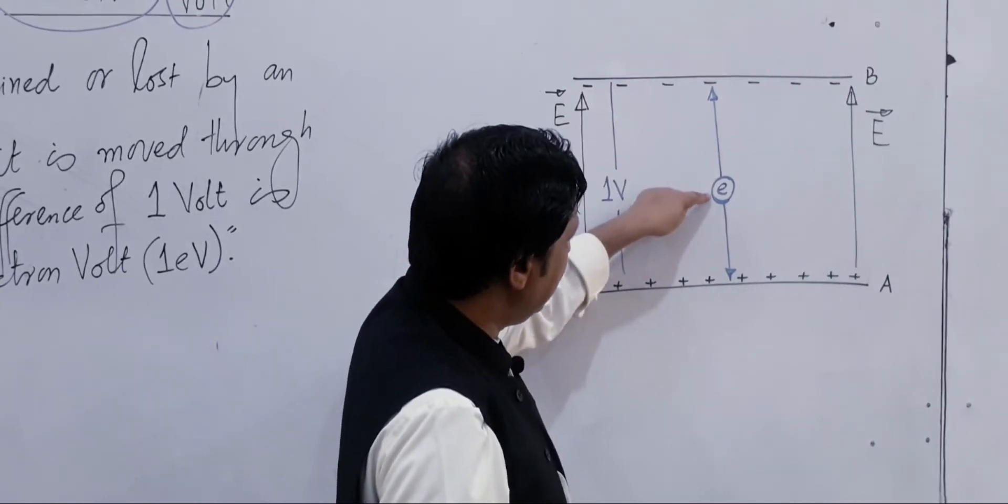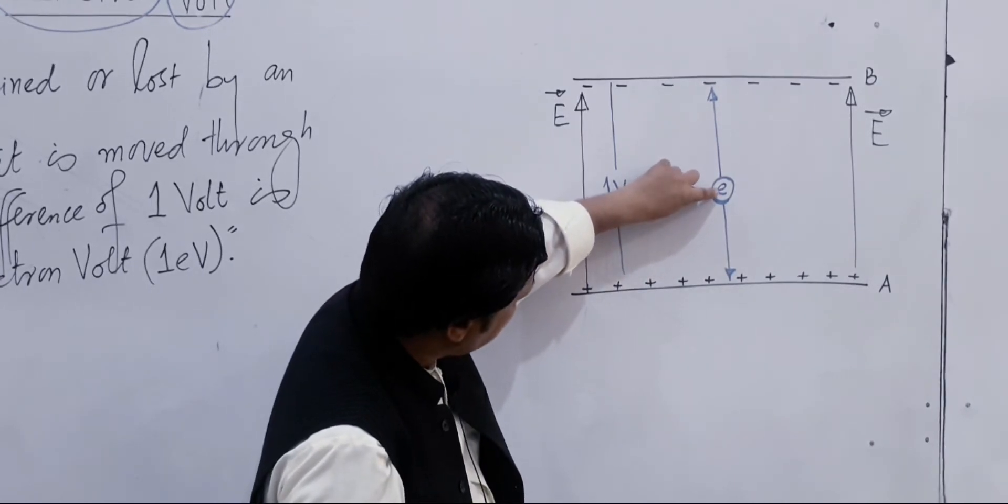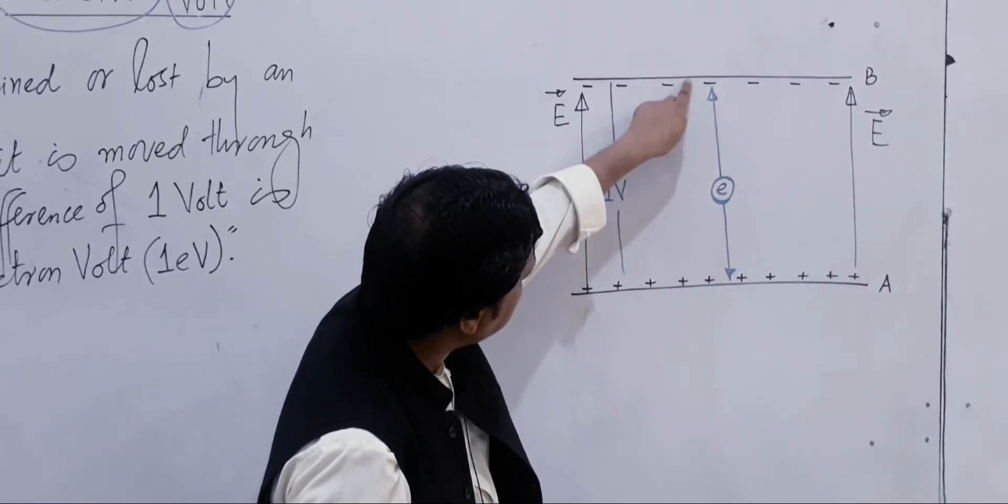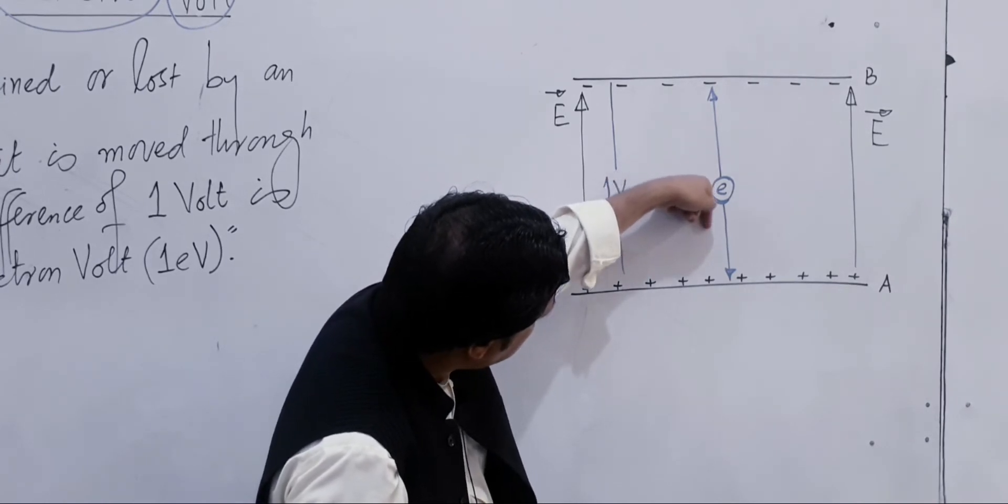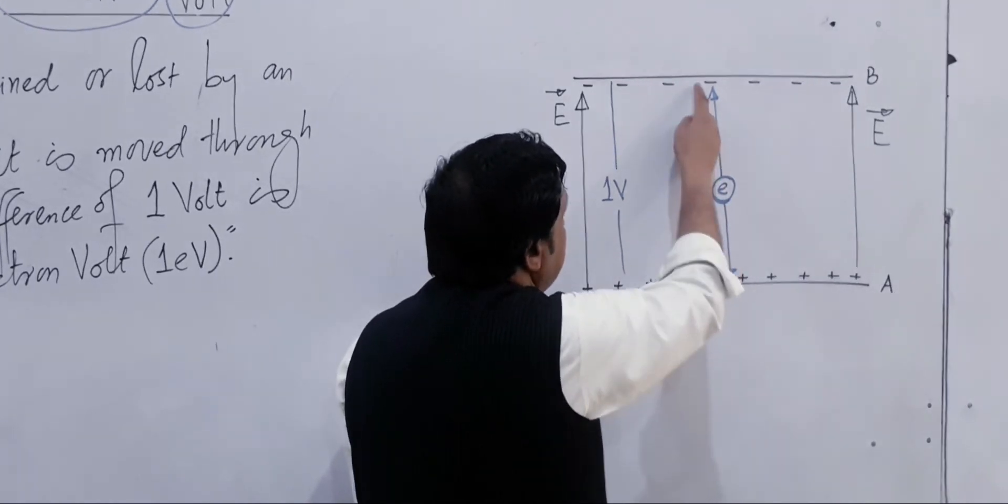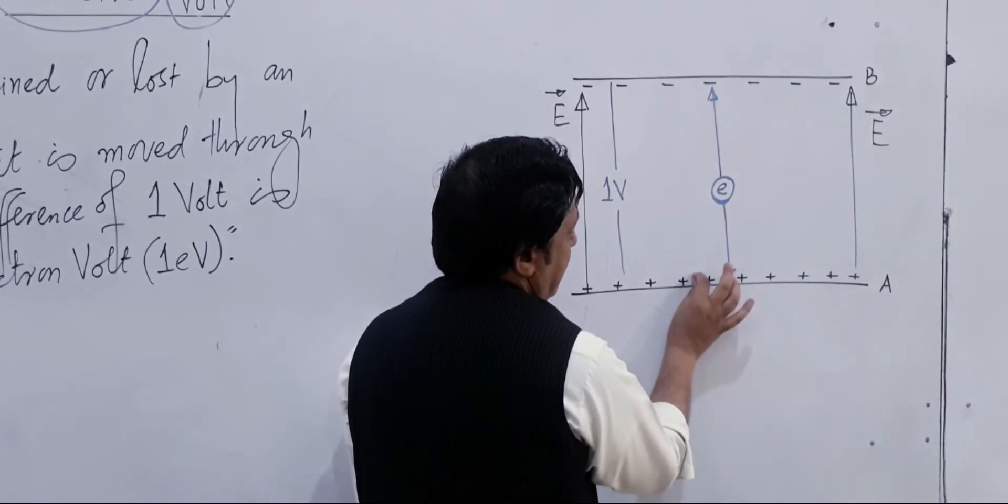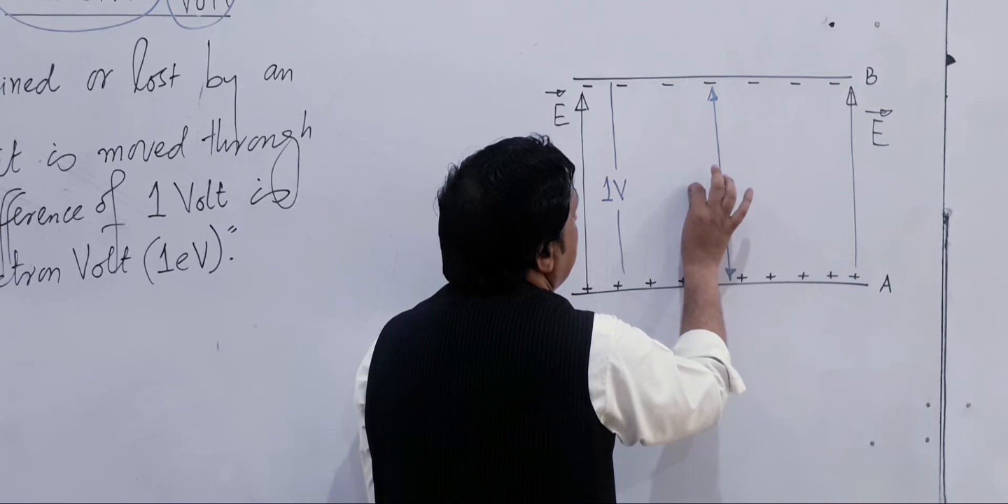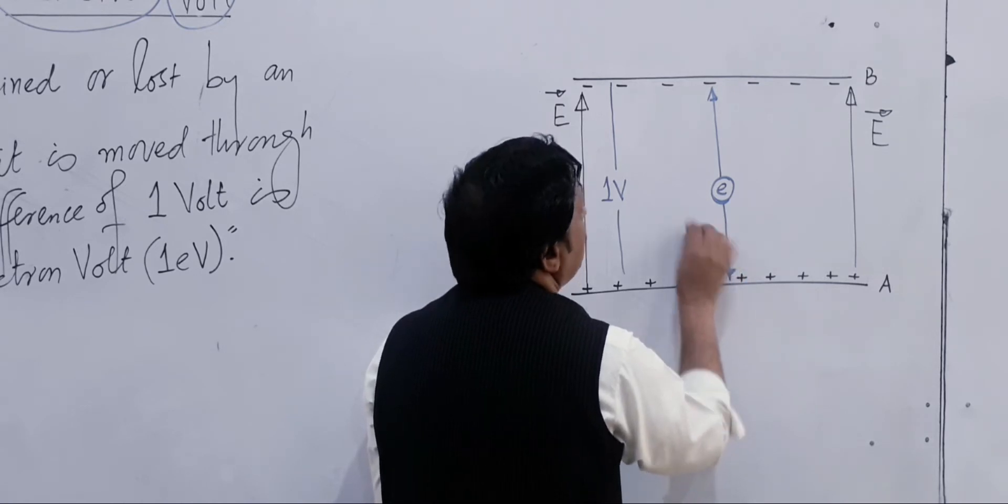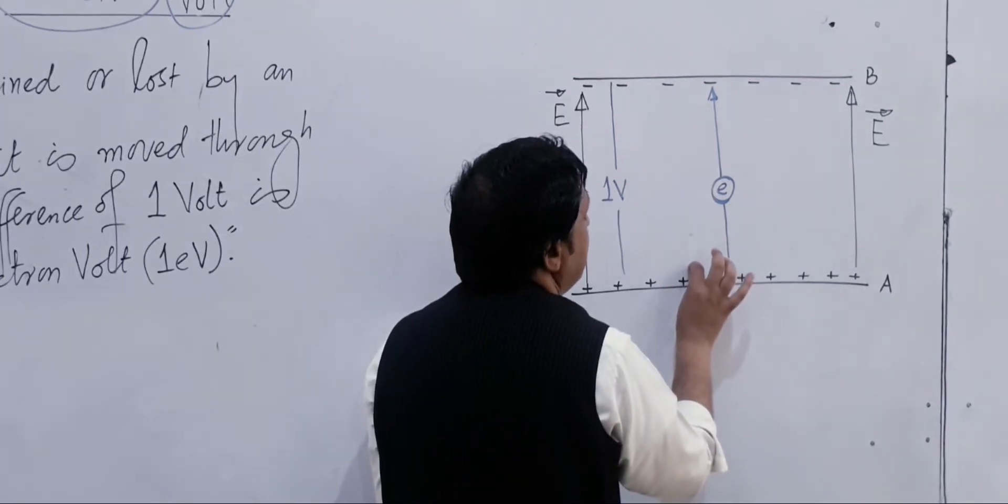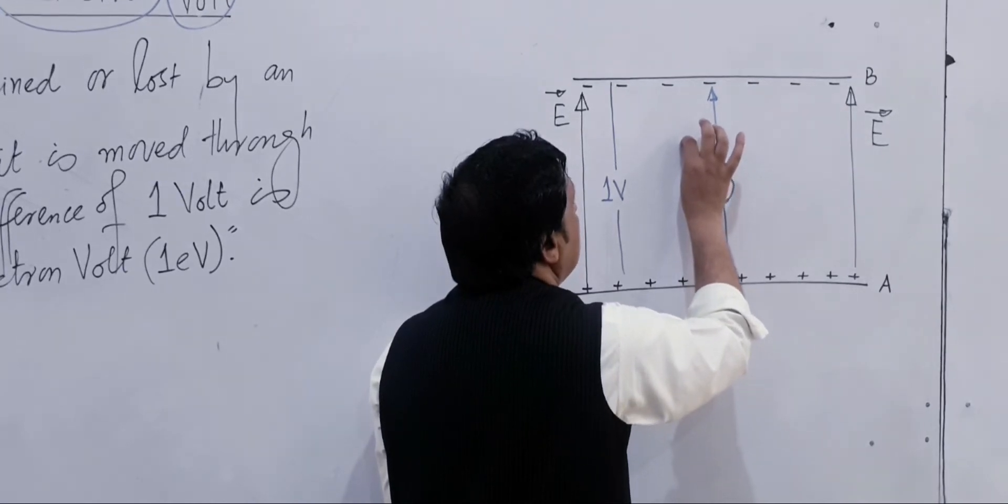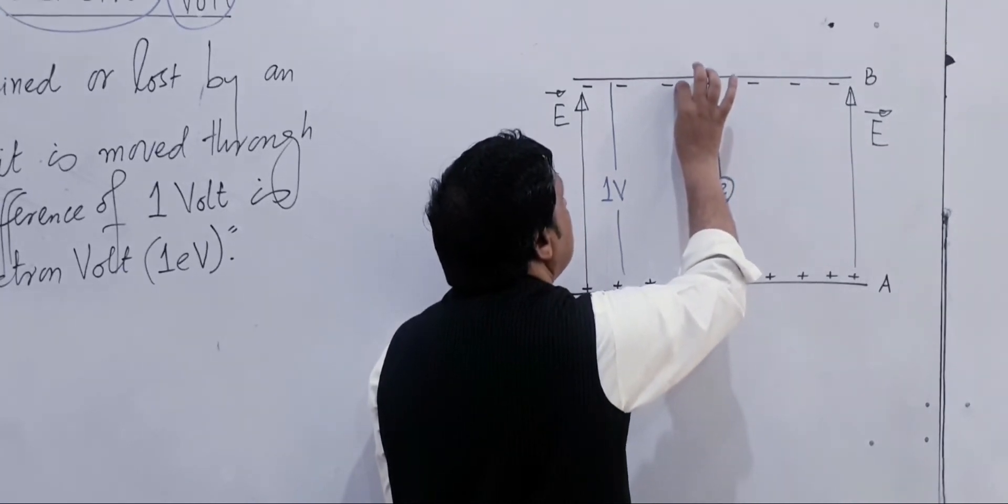The electron's charge is negative, so this electron is attracted by the positive plate and repelled by the negative plate. Look at the electron field of force. If you want to move this electron from plate A to B against the field, you will have to apply a particular force. The displacement is covered, work is done by you on the electron, and this work will be stored in this electron as its potential energy, called electric potential energy.